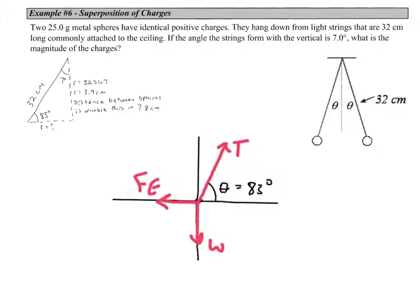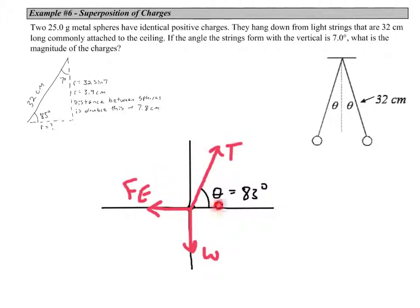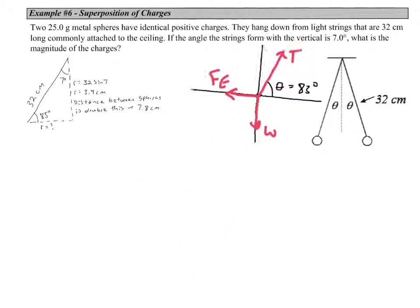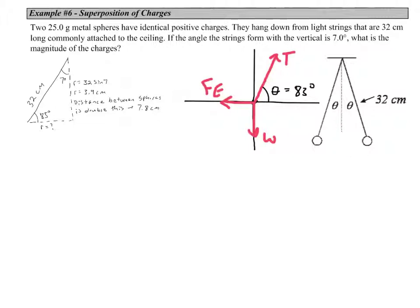The free body diagram for the left-hand sphere shows tension from the string, weight from the gravitational field, and the electric force from the other sphere. Using our analysis of the geometry, this angle works out to 83 degrees. These two spheres are just hanging there in equilibrium, so there's no net force on either sphere.